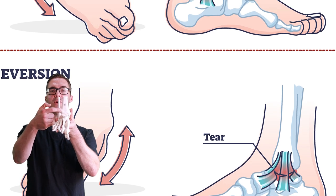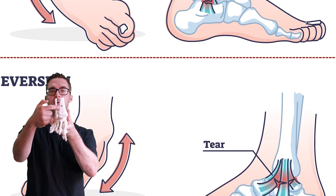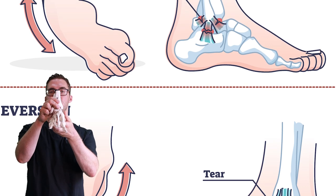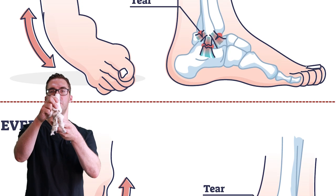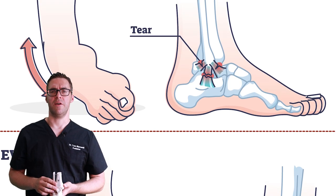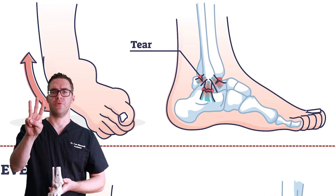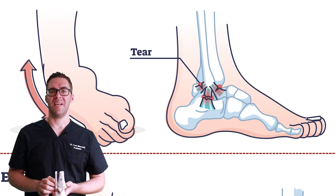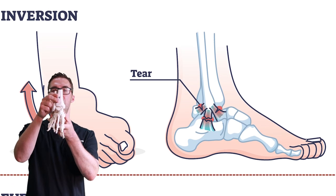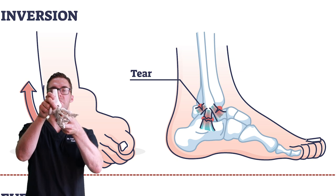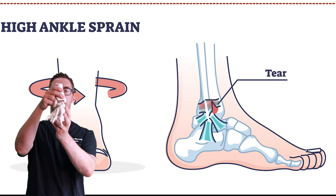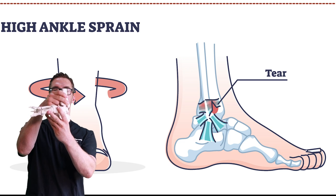The difference is the high ankle sprain is up here — it's in the top and front of the ankle, whereas the low ankle sprain is when your foot turns in. The anatomy is a little bit different. In the high ankle sprain there's three ligaments, and in the low ankle sprain there's three ligaments. The high ankle sprain is really when your knee is planted and your foot twists out.